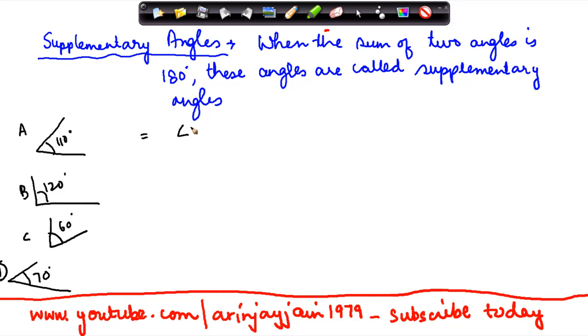So we know that angle A, which is this one, plus angle D is equal to 110 plus 70, which is 180 degrees. Similarly, we also know that angle B plus angle C is equal to 120 plus 60, which is equal to 180 degrees.